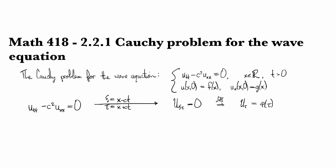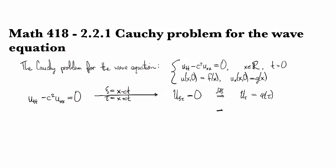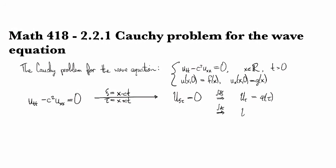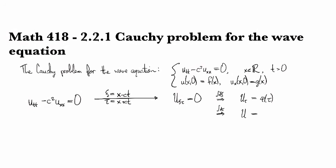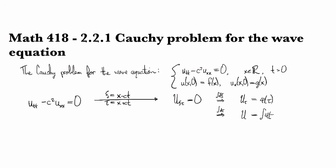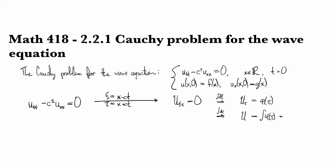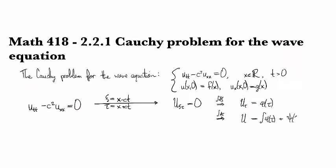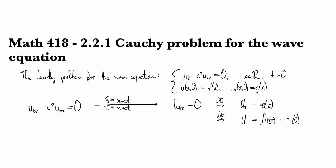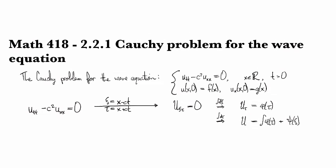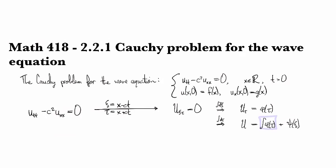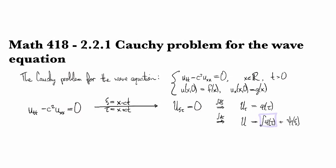And then if we integrate with respect to the other variable, so integrate dτ, then we get u is equal to the integral of φ plus some constant. Again, however, this is going to be some function of ξ. So now since these are both arbitrary, this one here we can just replace by whatever arbitrary function of τ.